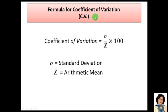Formula for Coefficient of Variation: Standard deviation upon Arithmetic Mean into 100. So we will calculate the standard deviation and arithmetic mean.